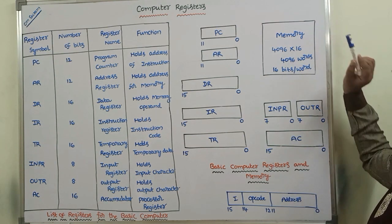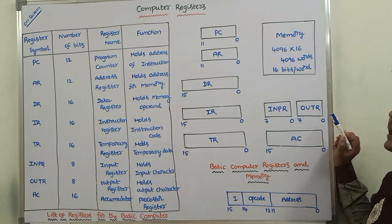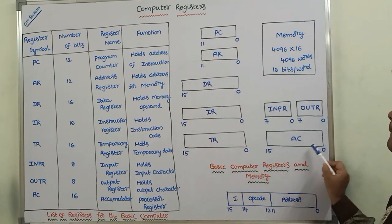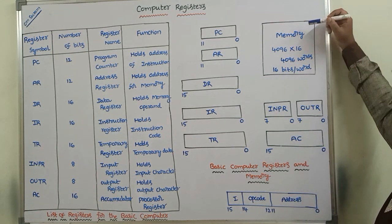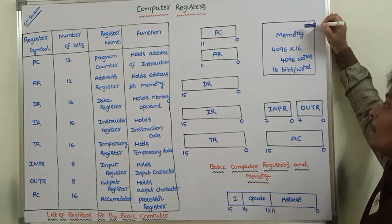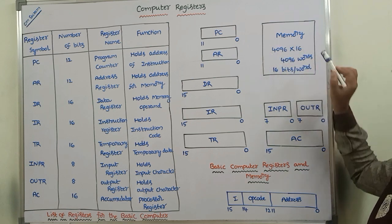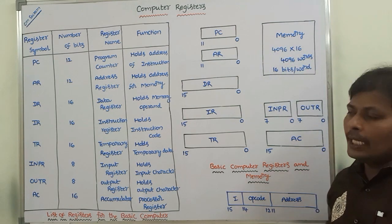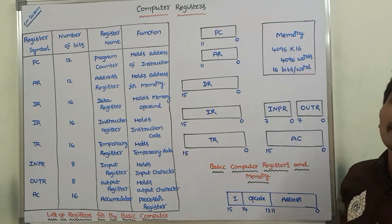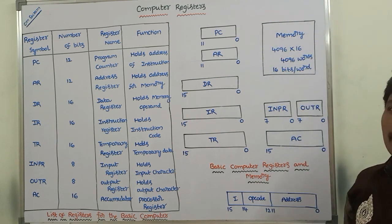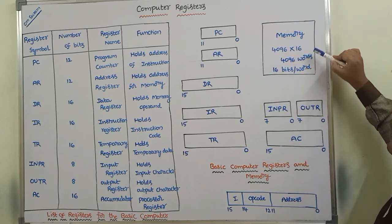In addition to the computer memory, there are 8 registers used for processing the data stored in the memory. This is the memory unit and these are the 8 general purpose registers. The memory unit has a capacity of 4096 by 16 — that means the memory unit contains 4096 words, and each word contains 16 bits. The computer instructions are stored in the memory.